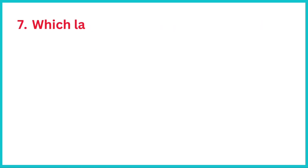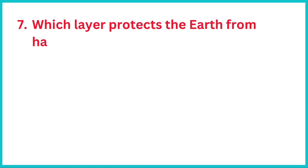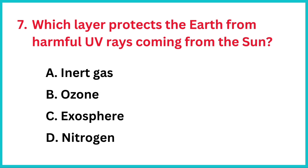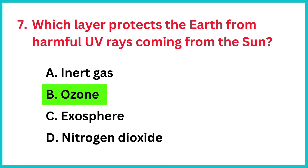Which layer protects the earth from harmful UV rays coming from the sun? The correct answer is option B: Ozone.